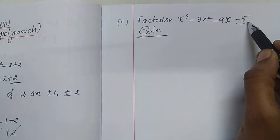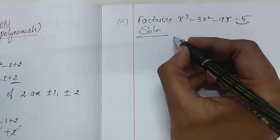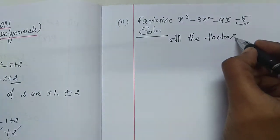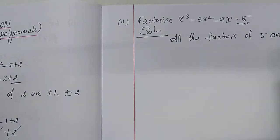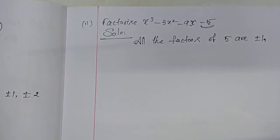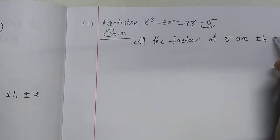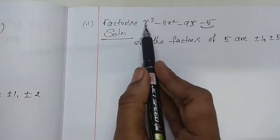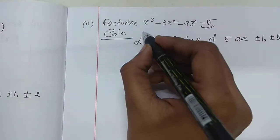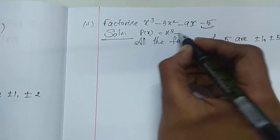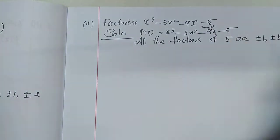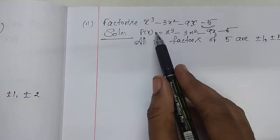Therefore, first write all the factors of 5. All the factors of 5 are plus or minus 1 and plus or minus 5. By trial method, substitute any one of the numbers in the given polynomial P of x, which is x cube minus 3x square minus 9x minus 5.